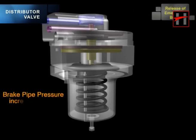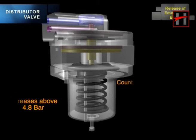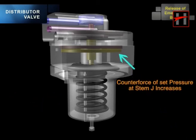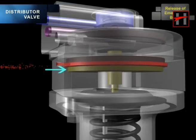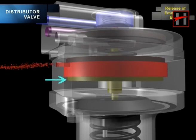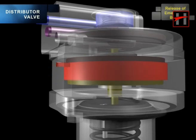When the brake pipe pressure increases above the releasing value of 4.8 bar, the counterforce of set pressure at stem J increases. When the counterforce increases, it pushes the stem J downwards against the spring force of the spring.